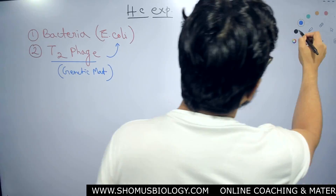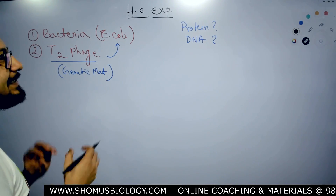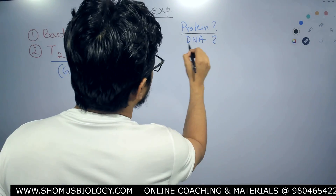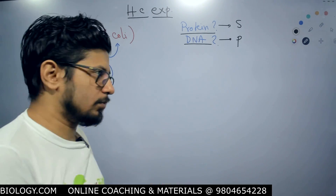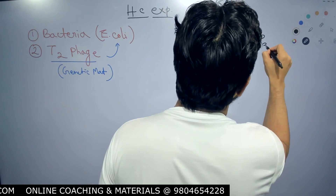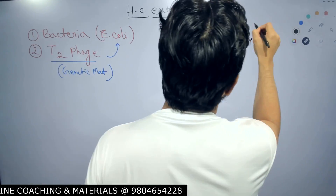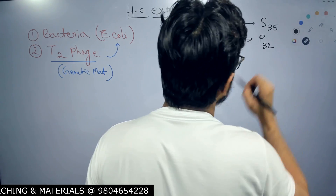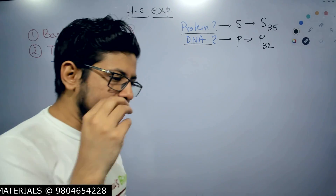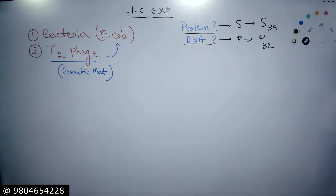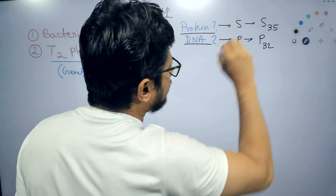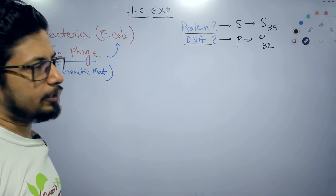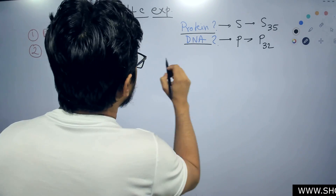The experiment performed by Hershey and Chase involved marking both macromolecules — proteins and DNA. Proteins contain sulfur and DNA contains phosphorus because DNA has a phosphate backbone. So the phosphorus in the DNA is marked with the radioisotope P32, and the sulfur in proteins is marked with S35. The radioactivity can be measured. They tag them because radioactive phosphorus is P32 and radioactive sulfur is S35 — sulfur is found in proteins, in amino acids like cysteine.